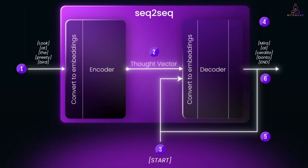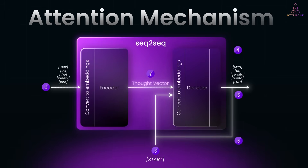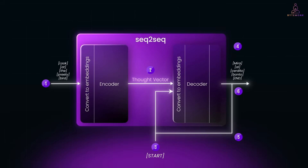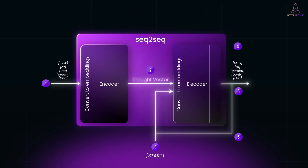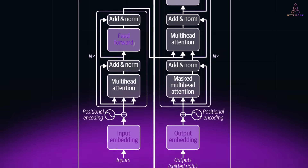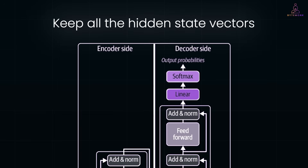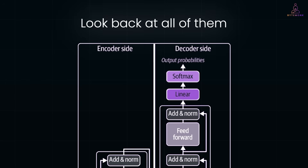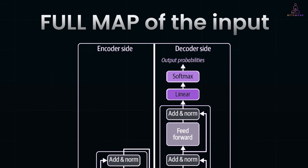Now here is the problem: that thought vector in the middle. It's fixed in size, no matter how long or detailed your input is — it gets squeezed into the same sized vector. So the longer the input, the more important info gets lost, making the decoder's job harder. To fix the bottleneck in sequence-to-sequence, researchers tried something new. In 2015, a paper introduced the attention mechanism. In the older models, only the last hidden state — the thought vector — was passed to the decoder, so all earlier token meaning had to be crammed into the final state. But with attention, we don't just pass the last one. We keep all the hidden state vectors, one per input token. Then while generating each output word, the decoder can look back at all of them. So instead of one summary, the model has a full map of the input.